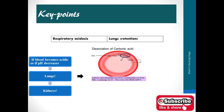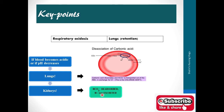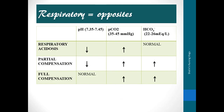To maintain the acid-base balance inside the body, the kidneys respond to excess acid in the blood by reabsorbing base or bicarbonate, and by excreting protons or hydrogen ions.